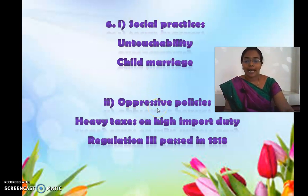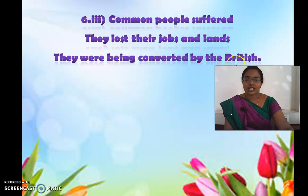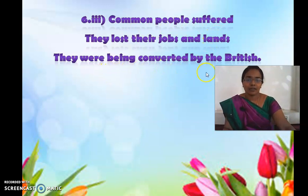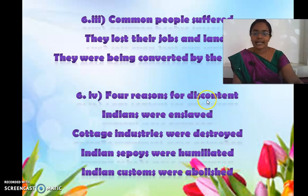The native people could not bear it. For the first and second questions I have given you ideas. Moving to the third question — common people suffered. They lost their jobs and lands, and they were being converted by the British. The measures taken by the British government made common people suffer a lot. Now for the four reasons for discontent, meaning dissatisfaction.